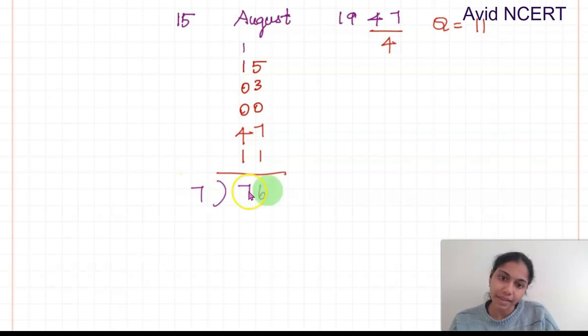Now divide 76 by 7 and find the remainder. 7 times 11 is 77 which goes more than 76. So 7 times 10 which is 70. So the remainder is 6.